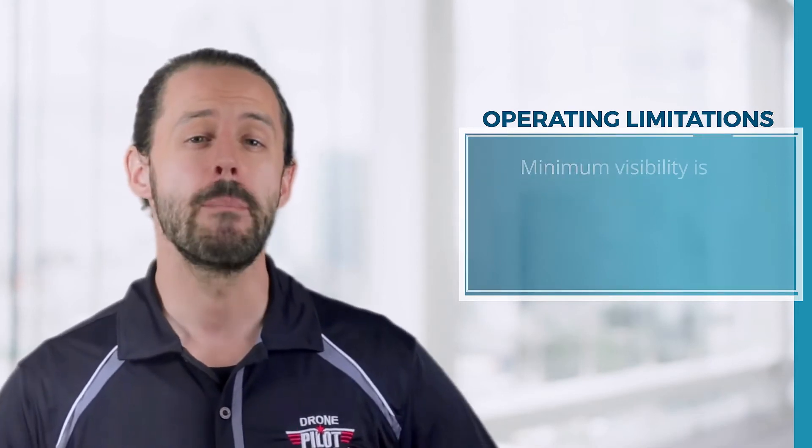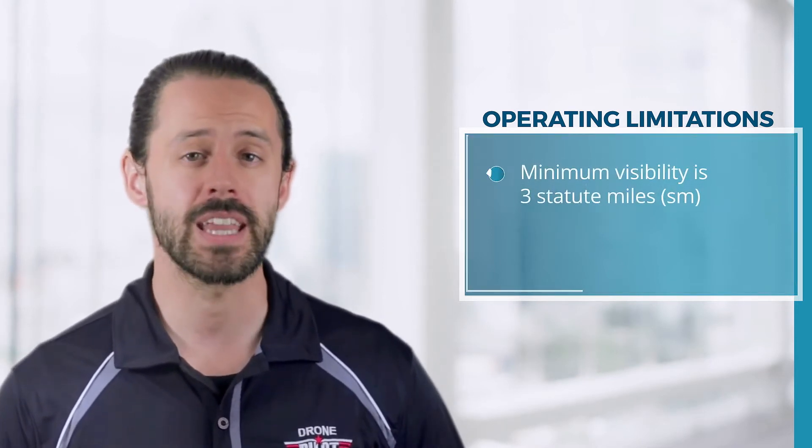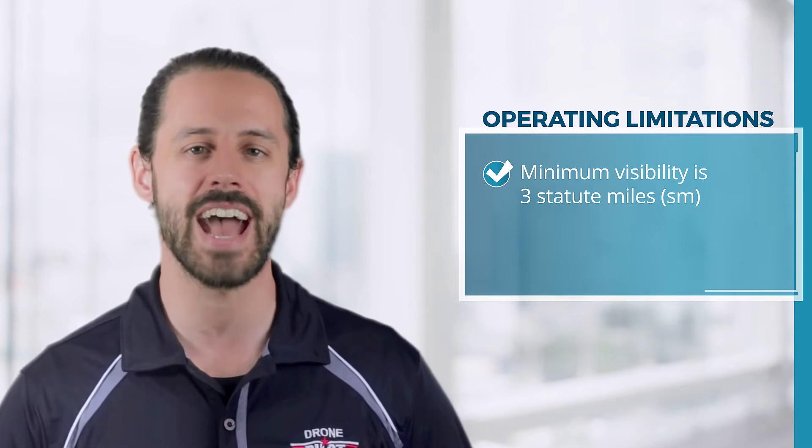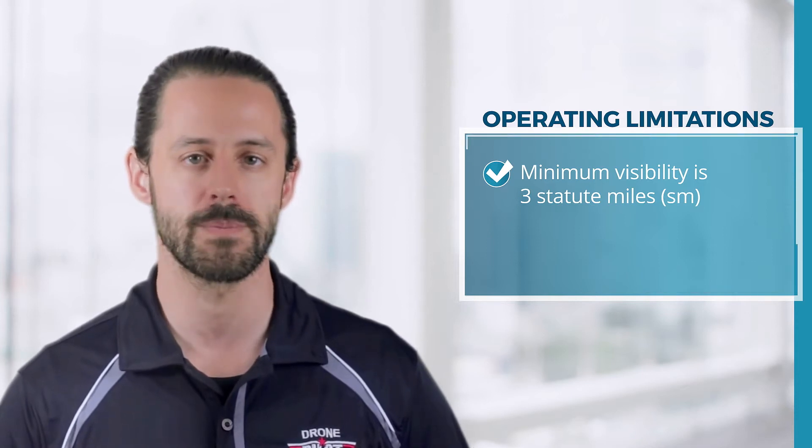Number two, minimum visibility, as observed from where you are operating the SUAS from — where your transmitter is — may not be less than three statute miles.